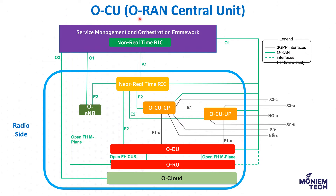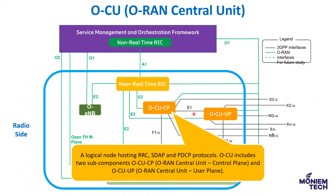In 5G, the base station is disaggregated into OCU, ODU, and ORU. The OCU — O-RAN Central Unit — is a logical node hosting the RRC, SDAP, and PDCP protocols. It is further disaggregated into two sub-components: OCU Control Plane and OCU User Plane. This function hosts the non-latency-sensitive protocols.